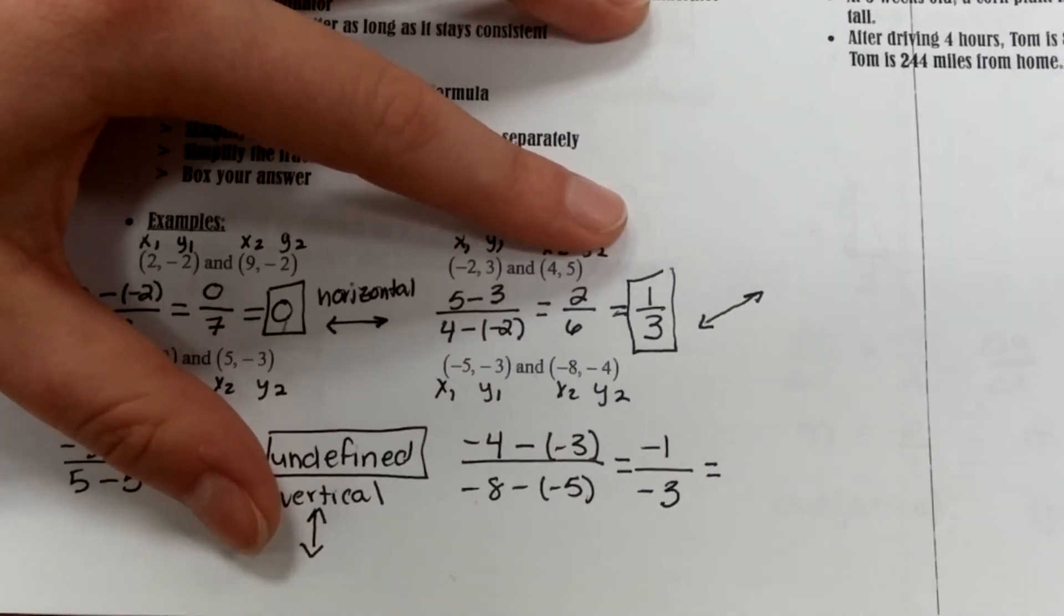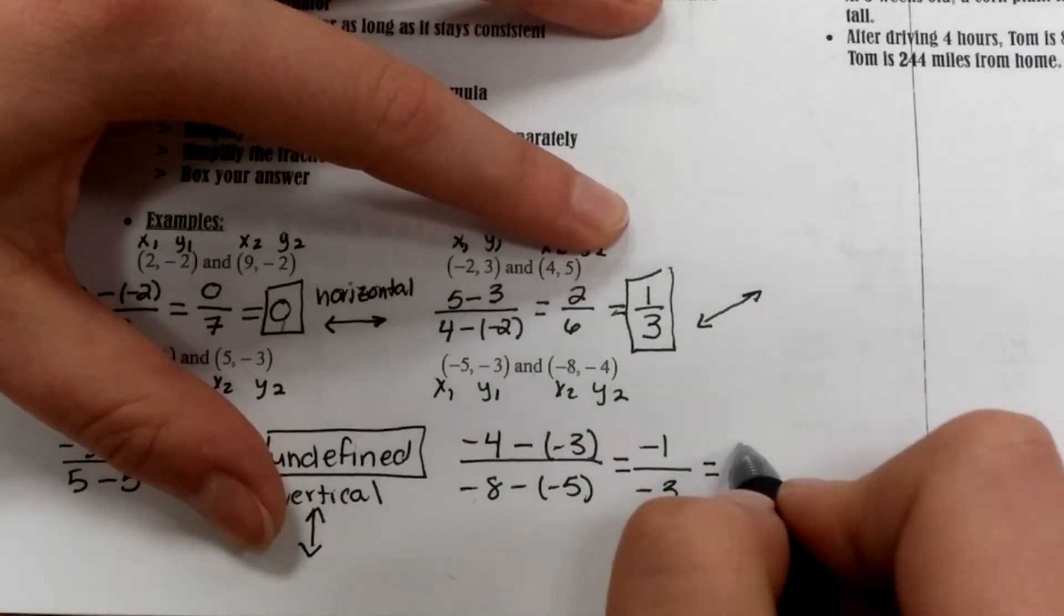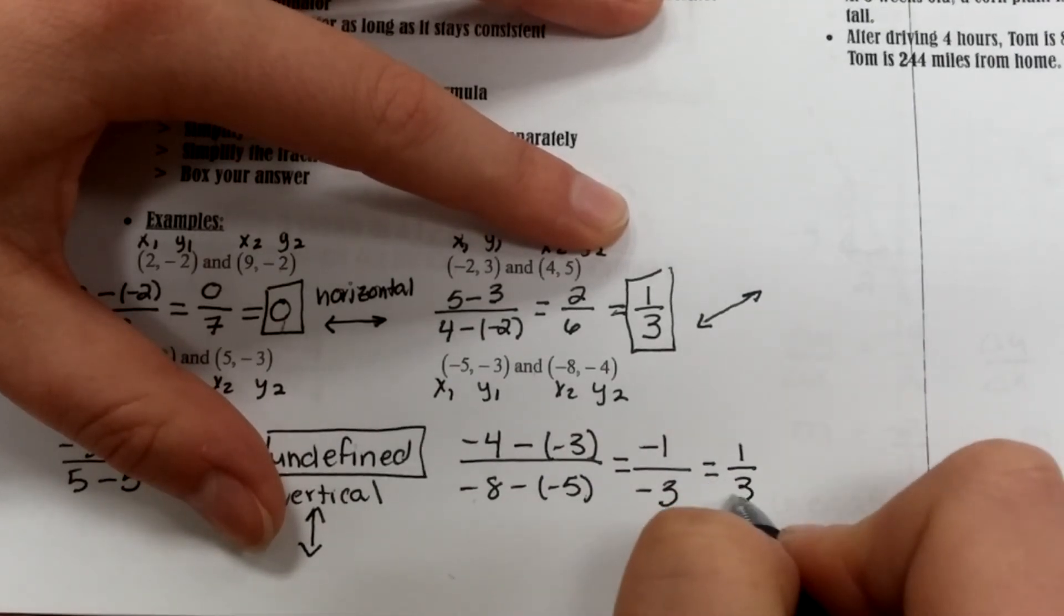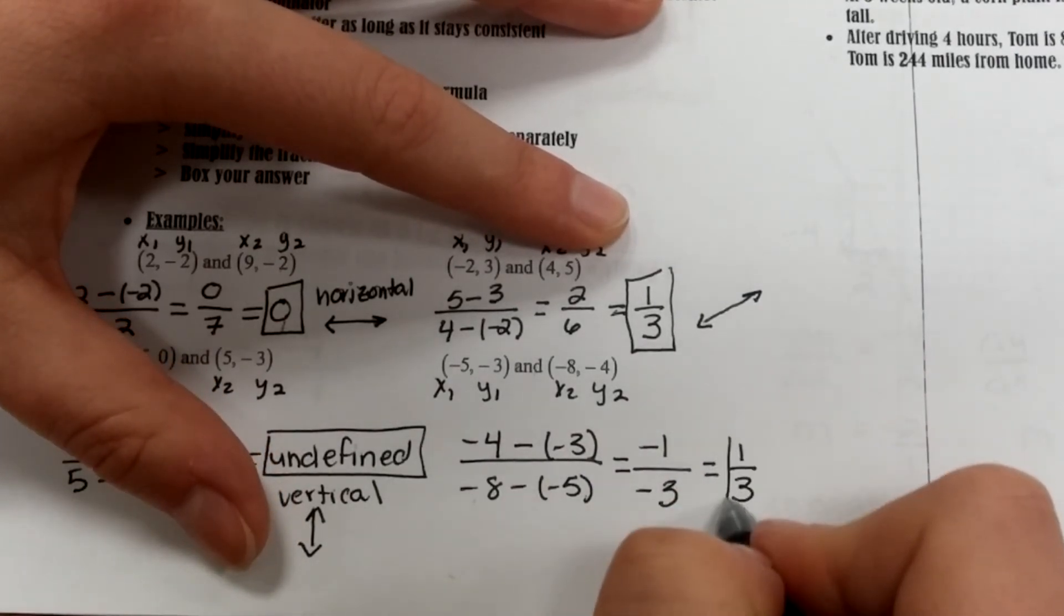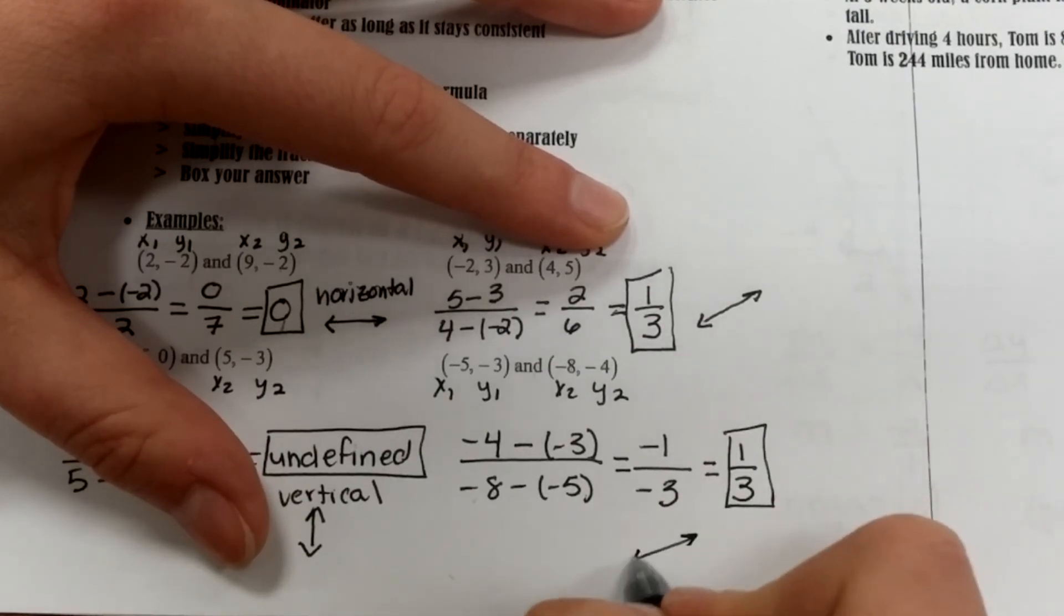Remember that a negative divided by a negative is the same as a positive, so this is going to be 1 third, which again means I have a positive slope, so I'm looking at another uphill line.